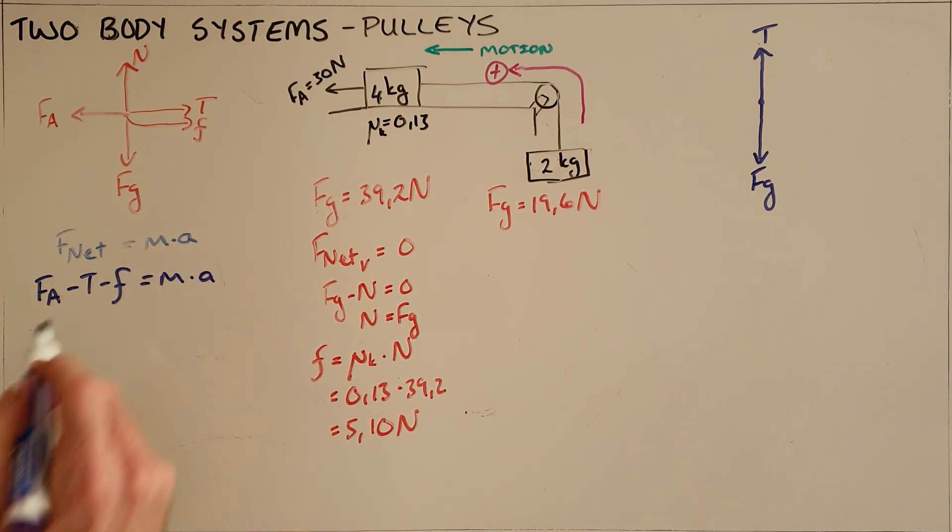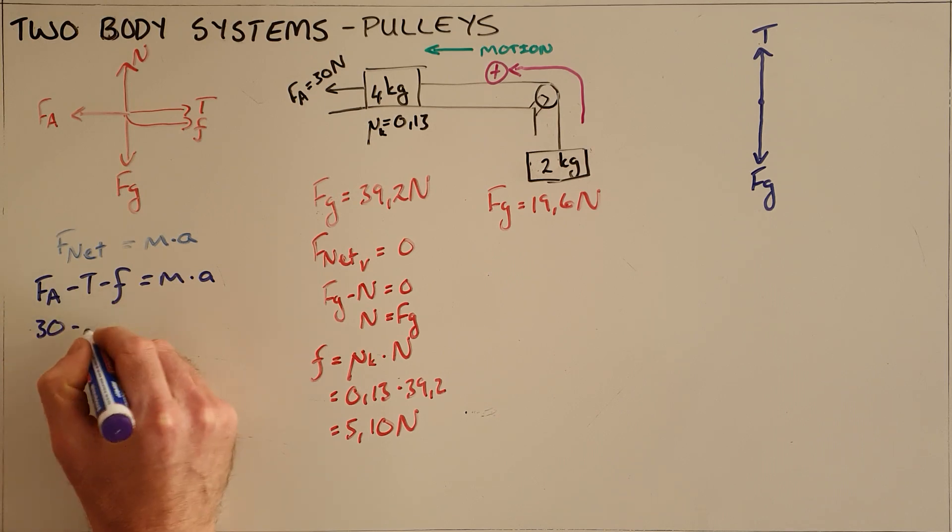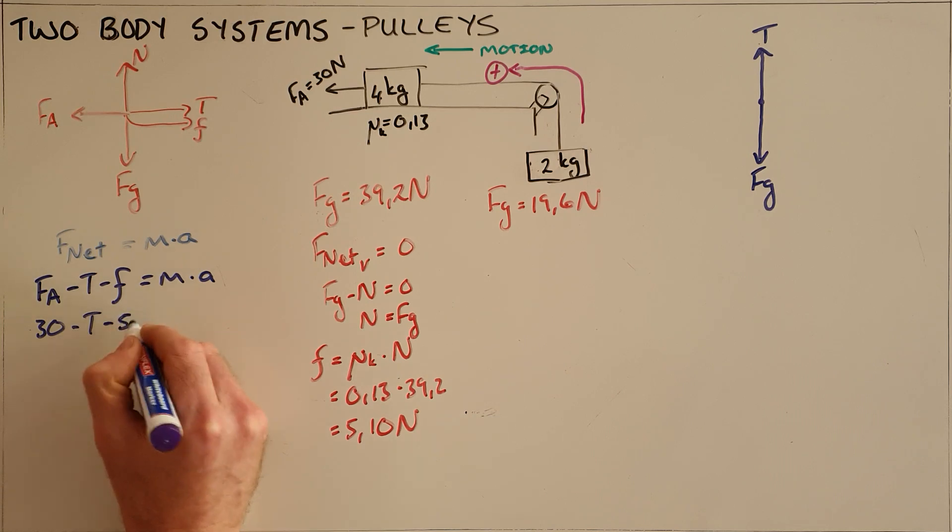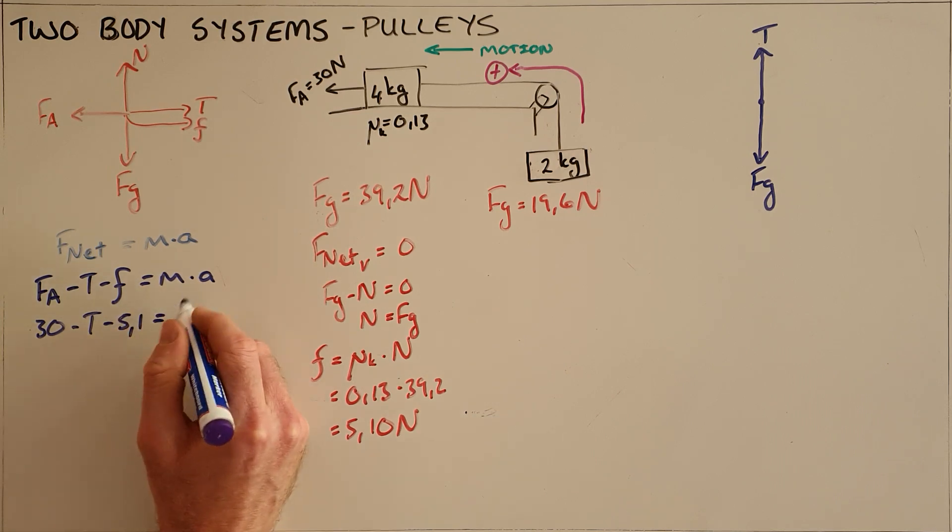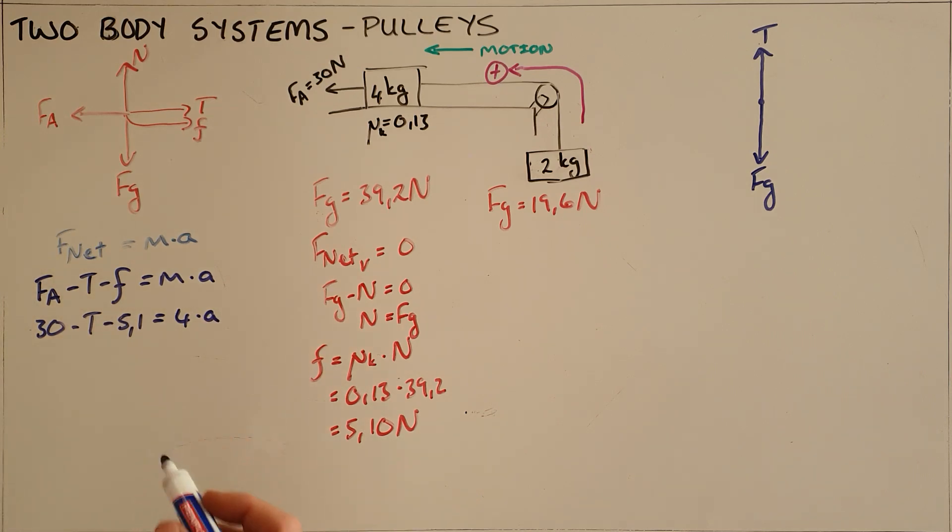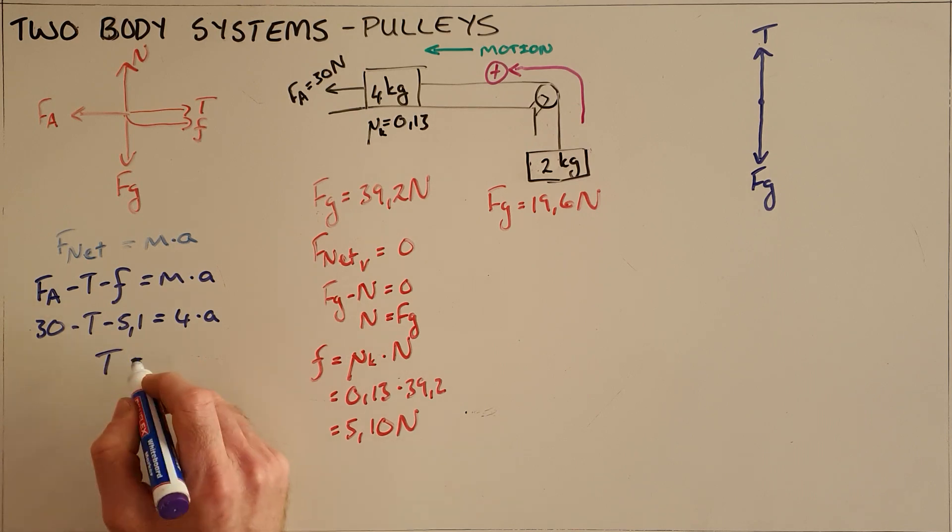We then substitute in the values that we already have, those being the applied force and the friction that we have calculated separately, and the mass of this object was given as 4 kilograms. We can rearrange this to write it as tension is equal to 24.9 minus 4a.